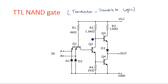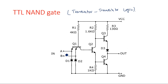In this particular TTL logic, along with transistors and resistors, we also use diodes. The diodes D1 and D2 are used to protect transistor Q1 from negative spikes. If any negative voltage is given at the input side instead of 0 volts or plus 5 volts, the diodes D1 and D2 immediately come into the on state and ground that negative spike, so it does not disturb Q1.